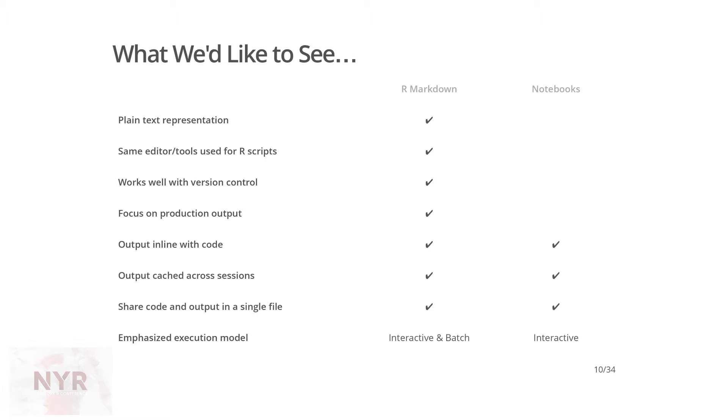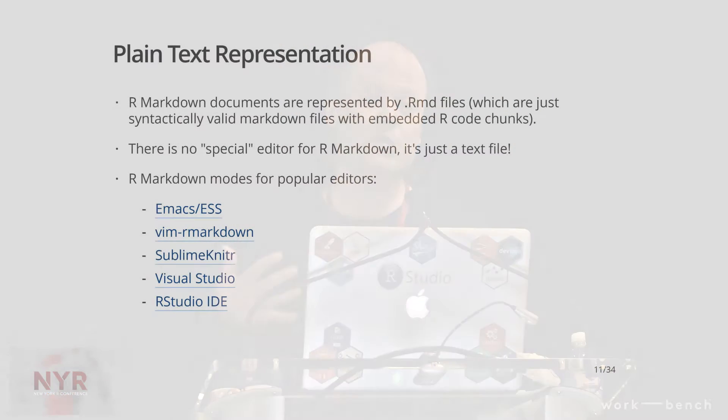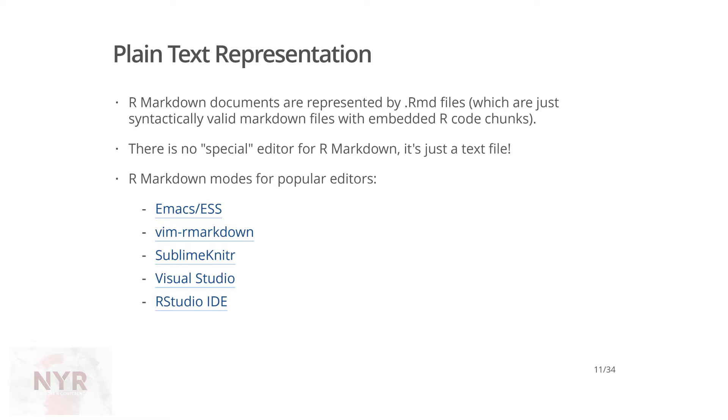The fundamental difference is that R Markdown has had a batch orientation — knit the document, run it, get the output in one shot. Notebooks are more interactive; a lot of it's about working through the document one cell at a time. You see the output inline with the code as you work. The output is stored in a single file along with the code, you can share just that file, and the output can be cached across sessions. What we want is for R Markdown to be able to do both — if you want a batch execution model focused on producing final production output, you have that; if you want an interactive execution model, you can have that too.